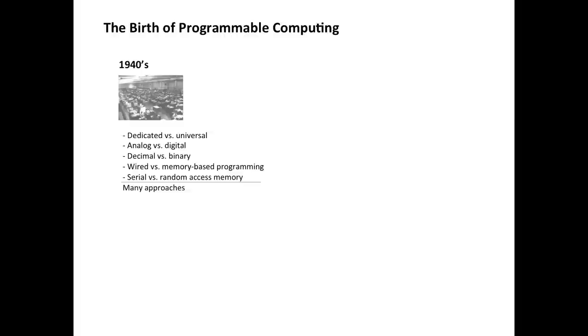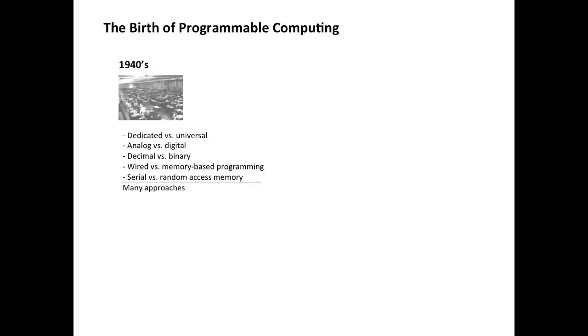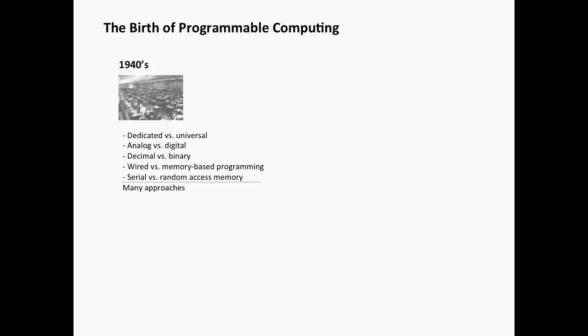Let me start with an analogy. This goes back to the 1940s, when we were witnessing the birth of programmable computers. At that time they were just starting to build computers and it was a very confusing time — there wasn't a lot of agreement about how to go about doing this. Some people were building dedicated machines designed to solve a particular problem. There were debates between analog and digital computers, decimal versus binary, and different programming and memory architectures.